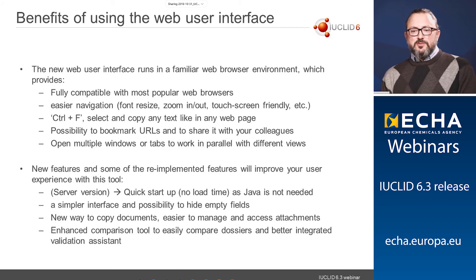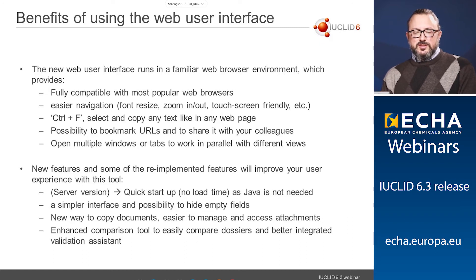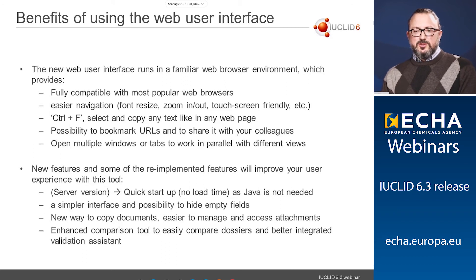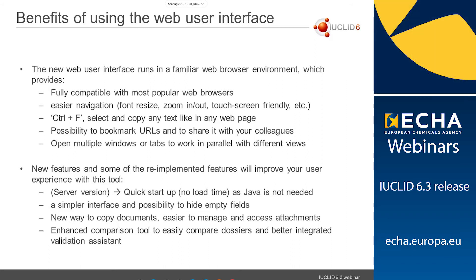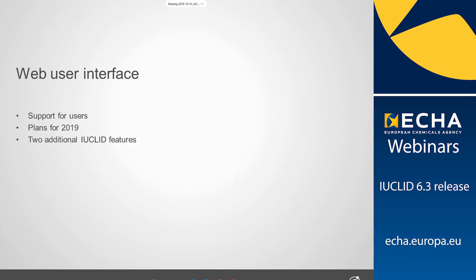To recap the benefits of using the web user interface: Euclid 6.3 is compatible with most popular web browsers, easing navigation with font resizing, zoom in/out, and touch screen support. The typical Ctrl+F to find information, selecting and copying anything visible in the web page, is also very useful. You can bookmark URLs and share them with colleagues, or work with multiple windows. Some features have been re-implemented to improve the user experience, and for server version users there is no need to wait for Web Start to launch — just go to the web link and it works. Thank you, and I give the floor to my colleague Mark.